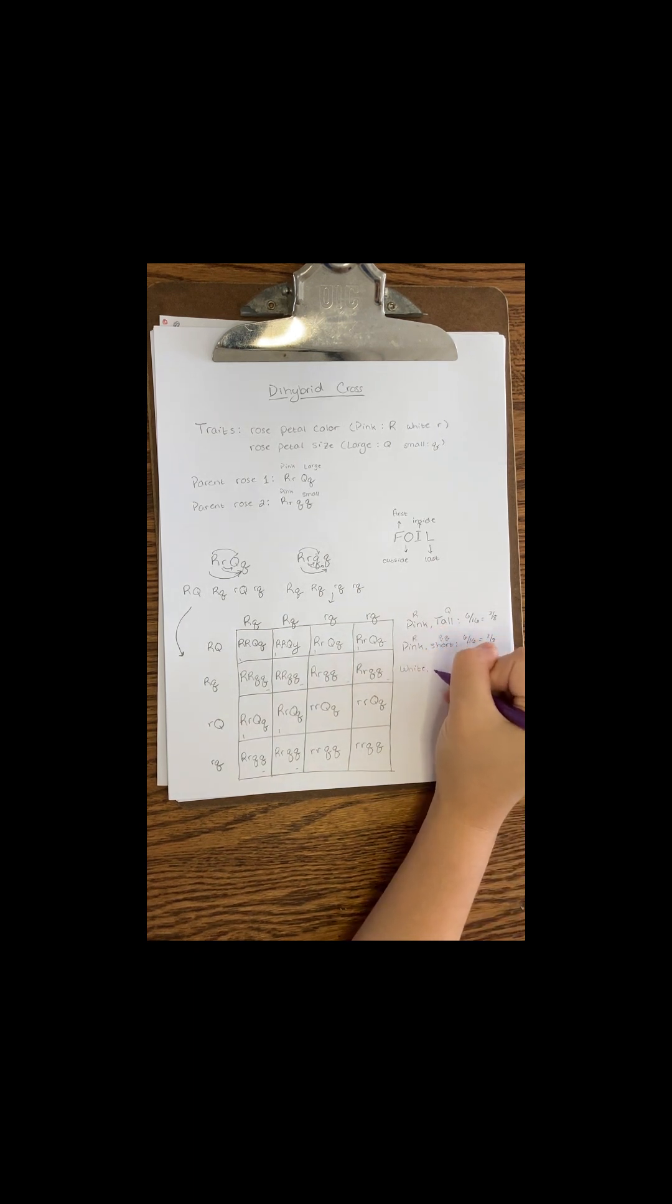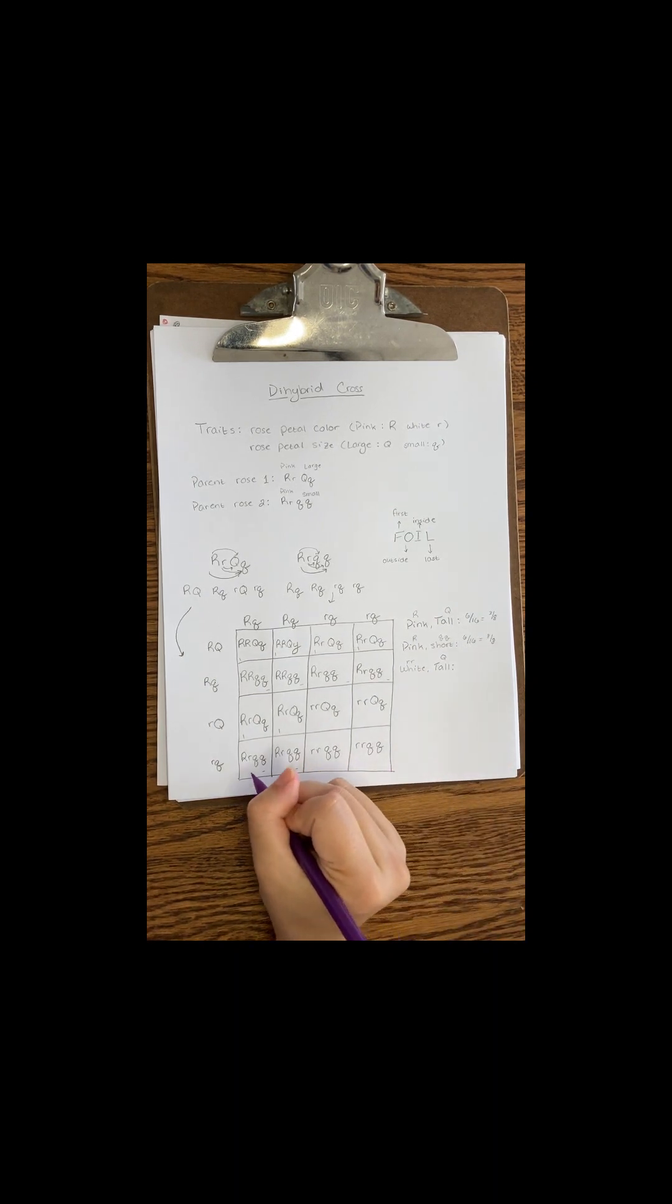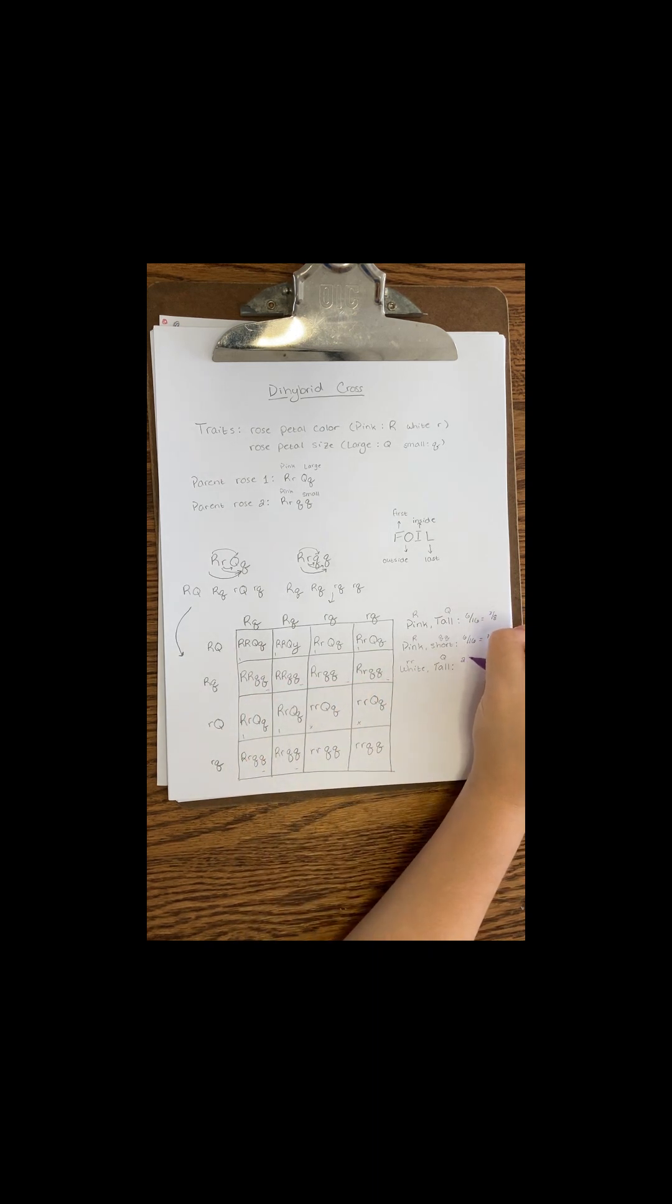Now let's do white petals that are large. We'll be looking for boxes with two lowercase r's, since white is a recessive trait, and at least one capital Q. I count 2 out of 16 boxes with this combination, which reduces to 1 eighth.